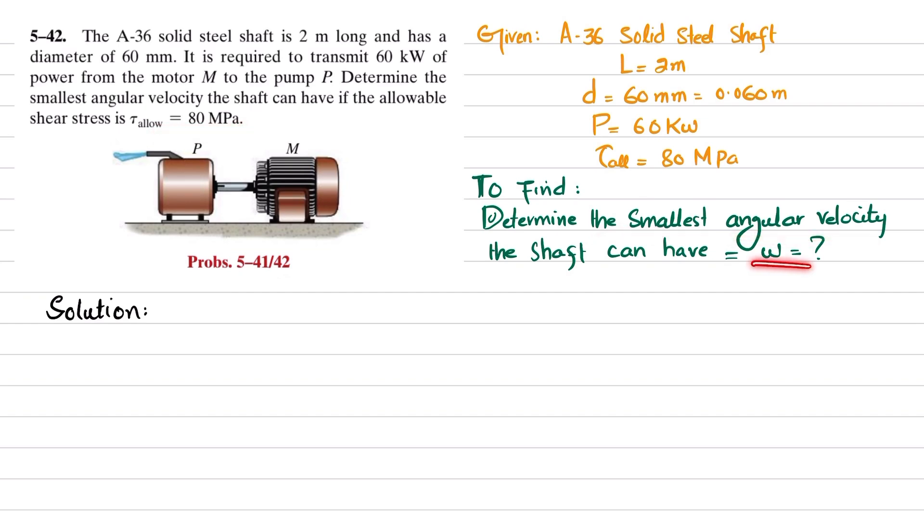Let's start with the solution. We know that power is equal to torque times angular velocity. From here we get ω equals power divided by torque. We have power but we do not have torque, so first we will find torque T.